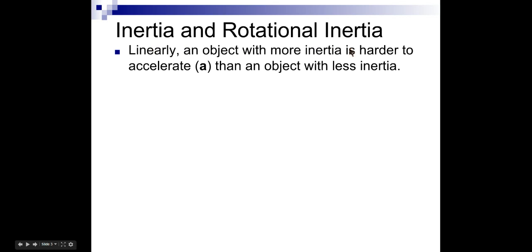So, inertia and rotational inertia. Linearly, an object with more inertia is harder to accelerate than an object with less inertia. It's another way of saying an object with more mass is harder to accelerate than an object with less mass. In linear motion, inertia is equivalent to mass.